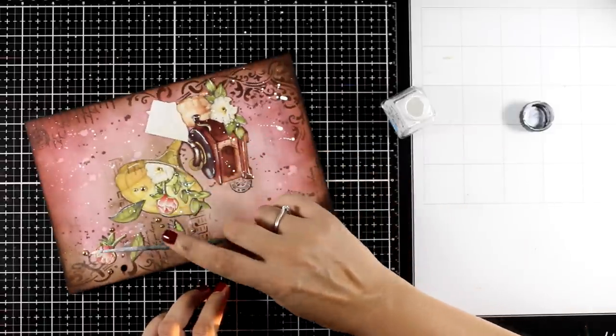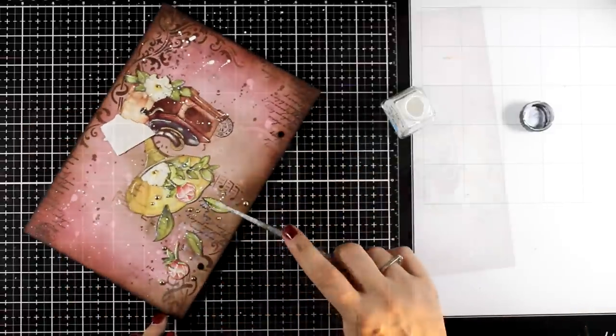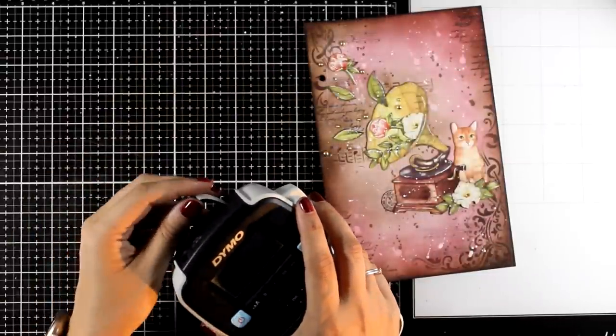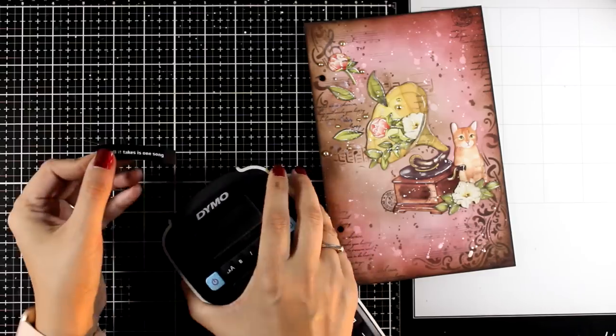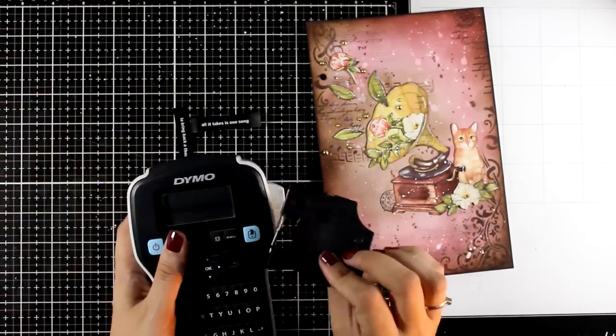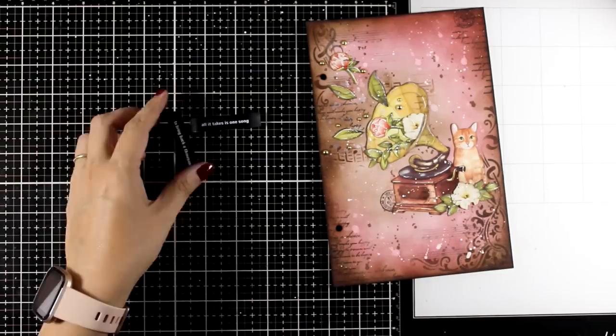And then let's move on to step number seven, which is the last. Sometimes for my quotes I like to print them out using my label maker. It's super handy. And then I did buy a new refill that prints white on top of black, and I am in love with this one.